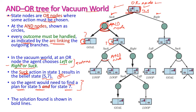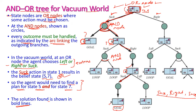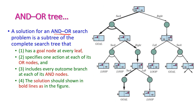In this tree, the solution found is shown in bold lines. First we implement the suck operation; after that we reach state 5. In state 5 we implement move right to reach state 6. In state 6 we implement suck to reach state 8, which is the goal state. So the action sequence is: suck, right, suck. This is the action sequence to reach the goal from state 1. The solution to the AND-OR search problem is a subtree of the complete search tree.